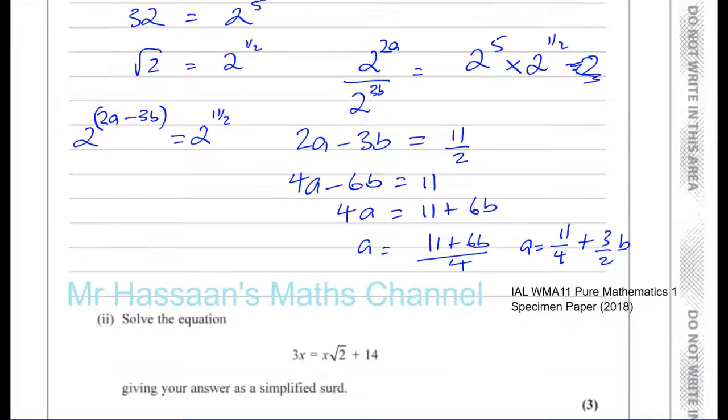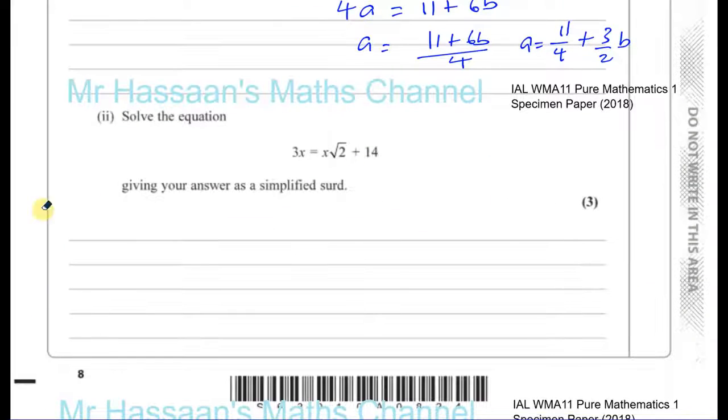Now we're going to do part 2, where it tells us to solve this equation, giving your answer as a simplified surd. So it means an exact form. I want to basically keep it in surd form. Now this is a pretty simple question, although a lot of people get confused by this. Root 2 is just a number, like number 4 or 5 or 6. It's just a constant.